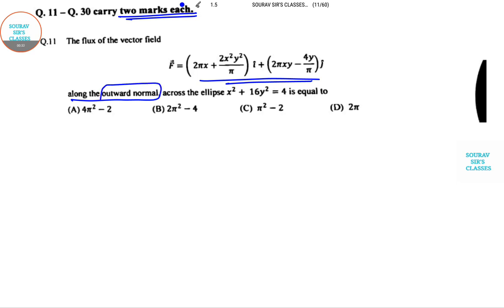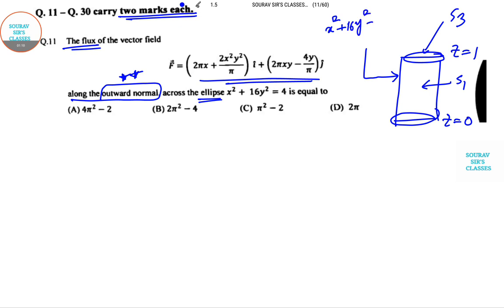Now this is very important - there is inward normal and outward normal. We have to find the flux. We need a smaller diagram, so let's start. This is the structure: z = 0 at the bottom, z = 1 at the top, so the whole part is 1. This one is S1, this is surface number 3, this one is x² + 16y² = 4, and S2 is this.